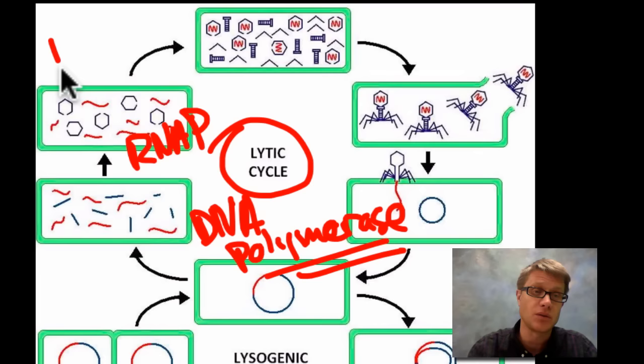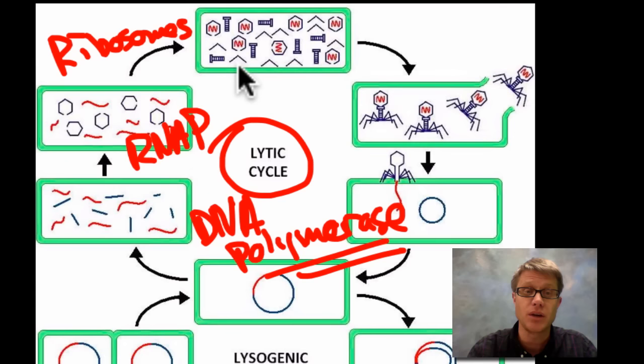So it's using the ribosomes inside the cell to make proteins. And so this right here would be transcription and translation. Eventually we have our genetic material, we have the proteins, and now we're going to lyse the cell. So what's happening is these viruses are actually erupting from the cell.